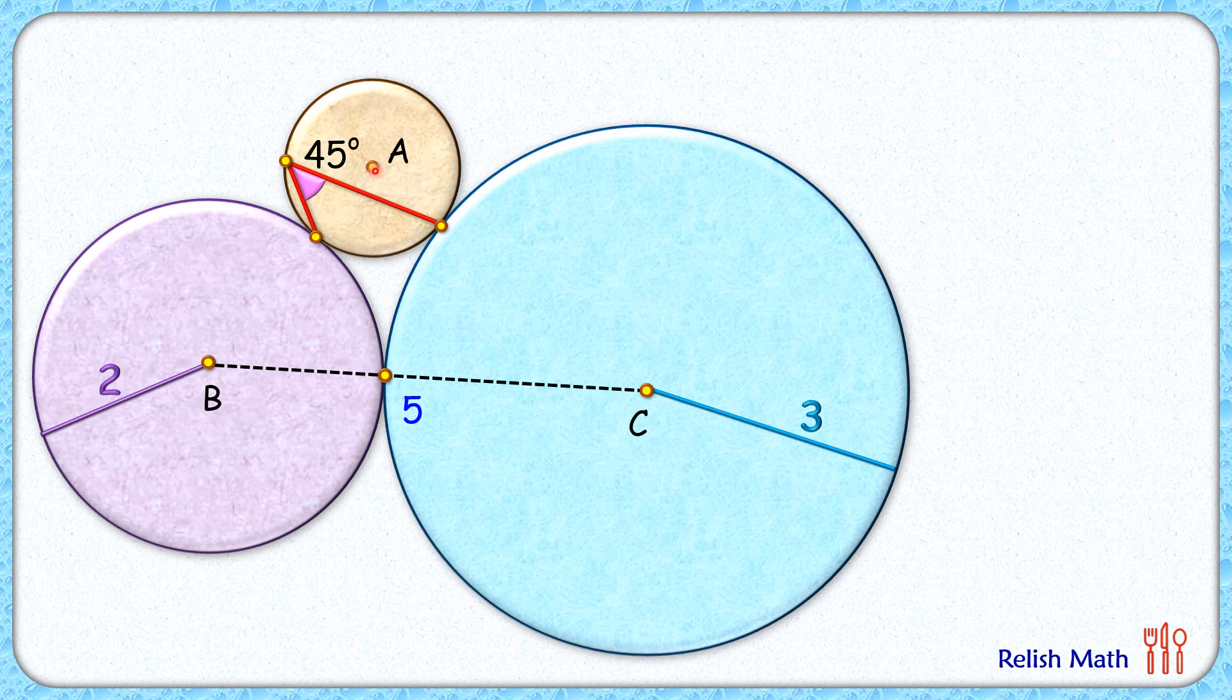Same way, center A, the point of contact, and center B will lie in a straight line. AB length will be r plus 2. Similarly, let's join AC here, and its length will be r plus 3.